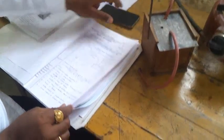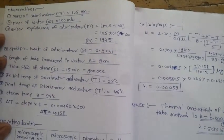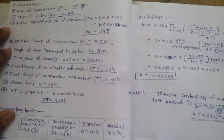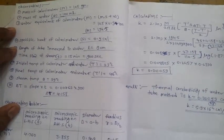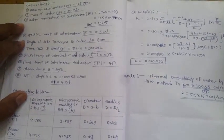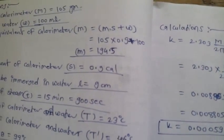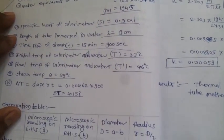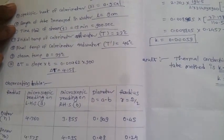At that time, we can take the observations. Mass of the calorimeter, capital M, is equal to 105 grams. Mass of water is 100 cc. The water equivalent of the calorimeter is equal to 105 into 0.9 (specific heat) plus 100 cc of water, which equals 194.5. So capital M equals 194.5. The specific heat of the calorimeter, capital S, is 0.9 calories. The length of the tube immersed in water, L, is equal to 9 cm.